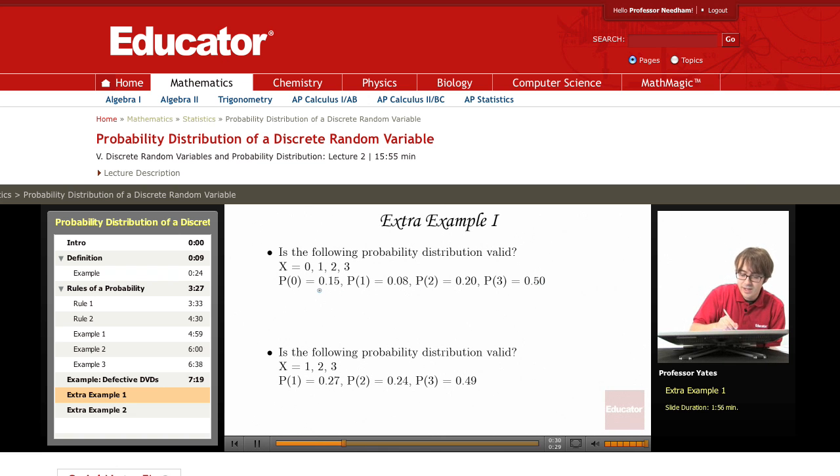So far each one of these is between 0 and 1, so rule number 1 is good. What about rule number 2?